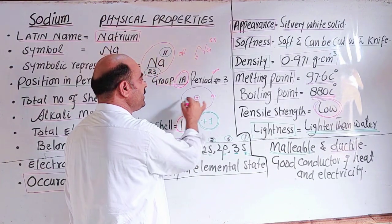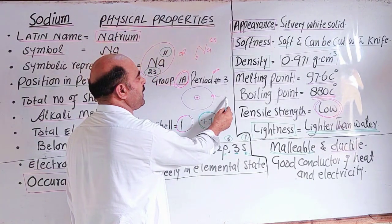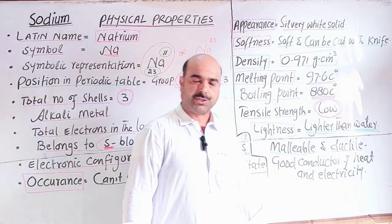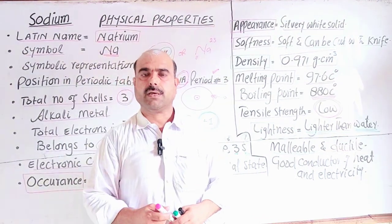Because electrons can easily flow, it is a good conductor of heat and electricity. Current can pass through it and heat can pass through it.